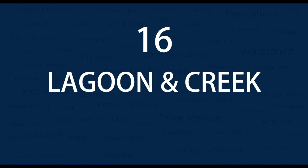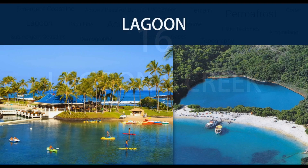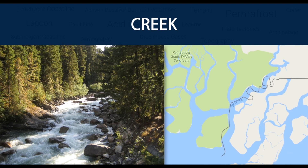Number 16 — Lagoon and Creek. Lagoons are shallow, often elongated bodies of water separated from a larger body of water by a shallow or exposed shoal, coral reef or similar feature. A creek is a narrow, sheltered waterway, especially an inlet in a shoreline or channel in a marsh. In India, two famous creeks are the Sur Creek and Kori Creek in Gujarat.